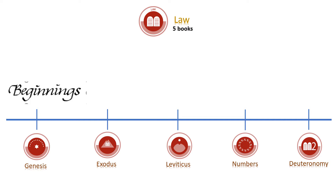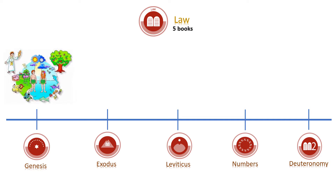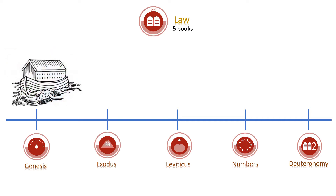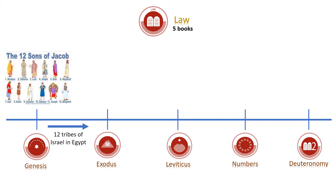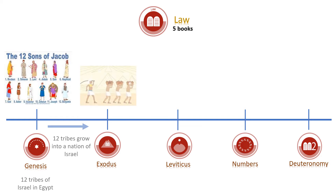You all know the first five books of the Bible. Genesis means 'beginnings' — that is the theme of this book. It records the beginning of the world in Genesis chapter 1 and the beginning of God's covenant people, Israel. It has the record of creation, the flood, Noah's ark, Abraham, Isaac, and Jacob, and the forming of the 12 tribes of Israel. God chose to reveal himself through the nation of Israel.